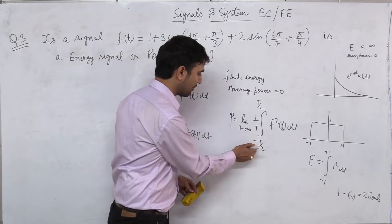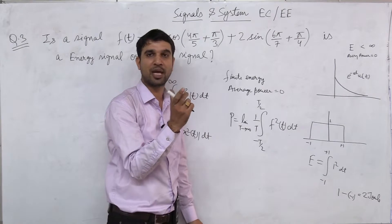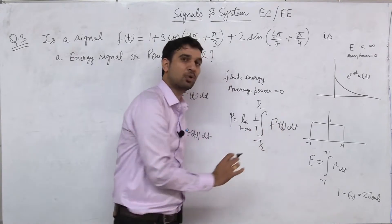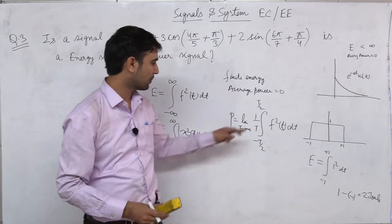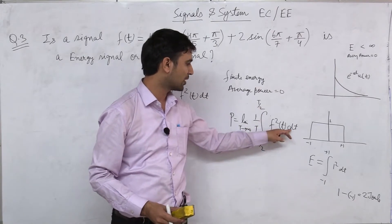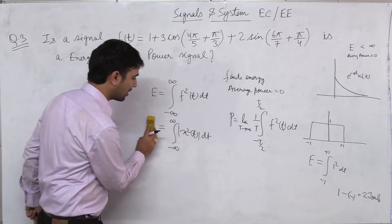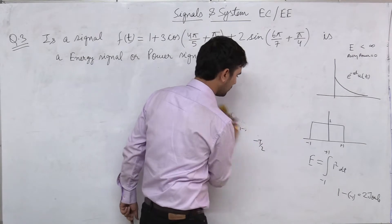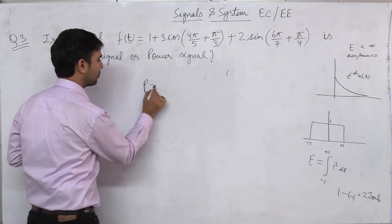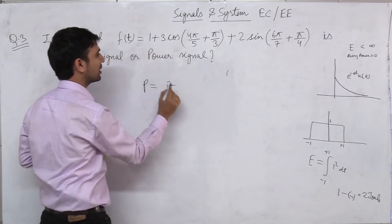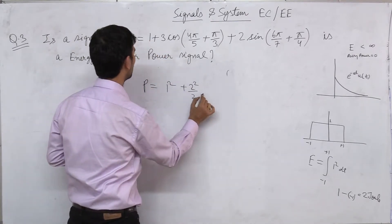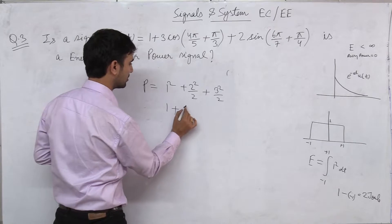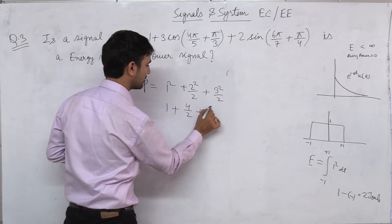The total time is from minus T/2 to plus T/2. The power of the signal can be found: P equals 1 squared plus 2 squared by 2 plus 3 squared by 2, that means 1 plus 4/2 plus 9/2.